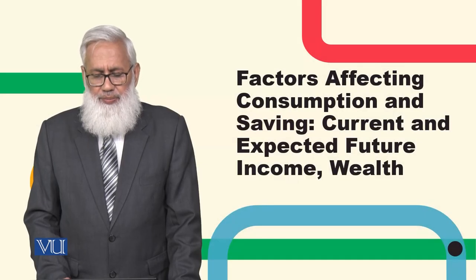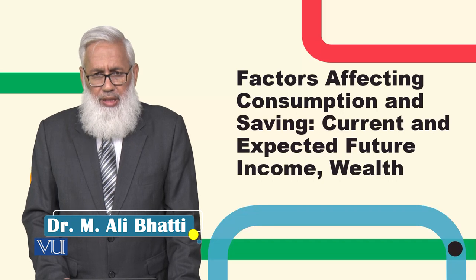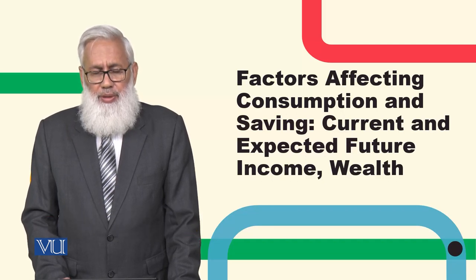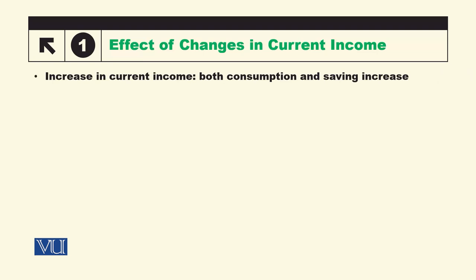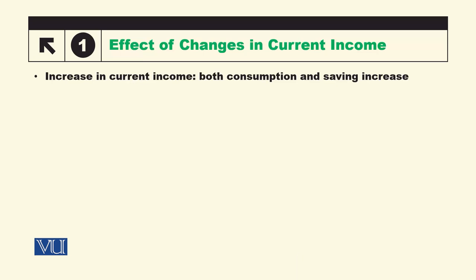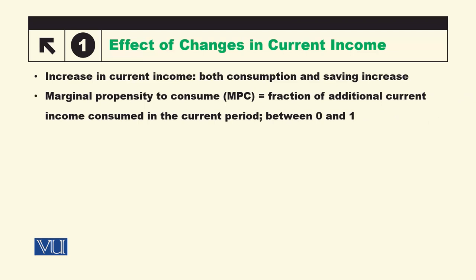Factors affecting consumption and saving include current and expected future income, and wealth. An increase in current income will increase both consumption and saving. How much consumption and saving will increase depends on the marginal propensity to consume (MPC) and marginal propensity to save (MPS). MPC plus MPS is equal to 1.